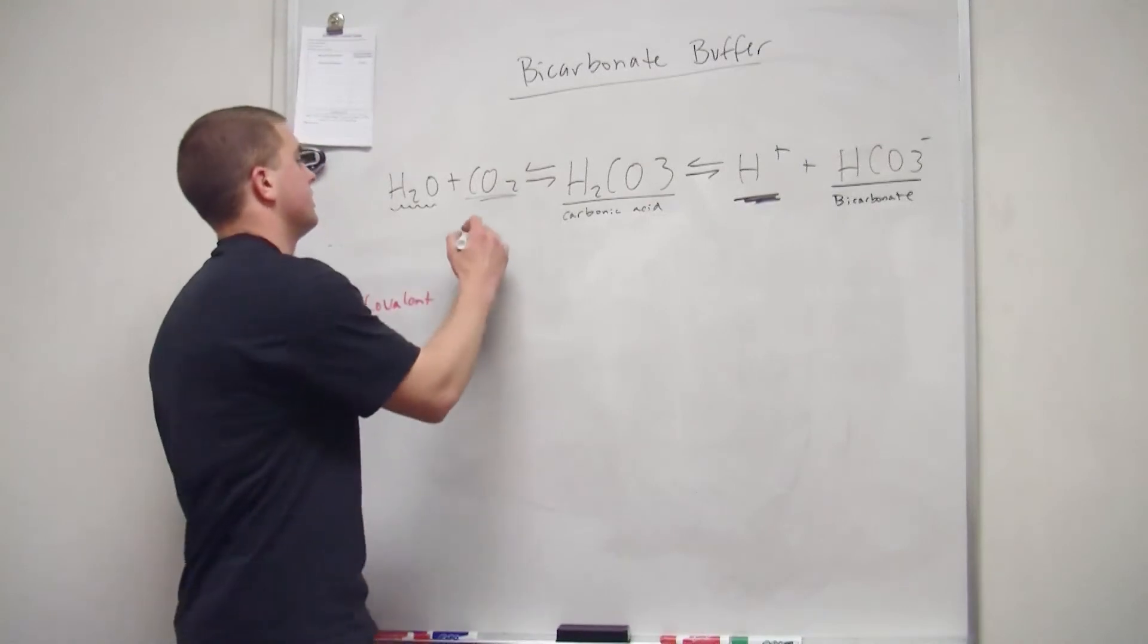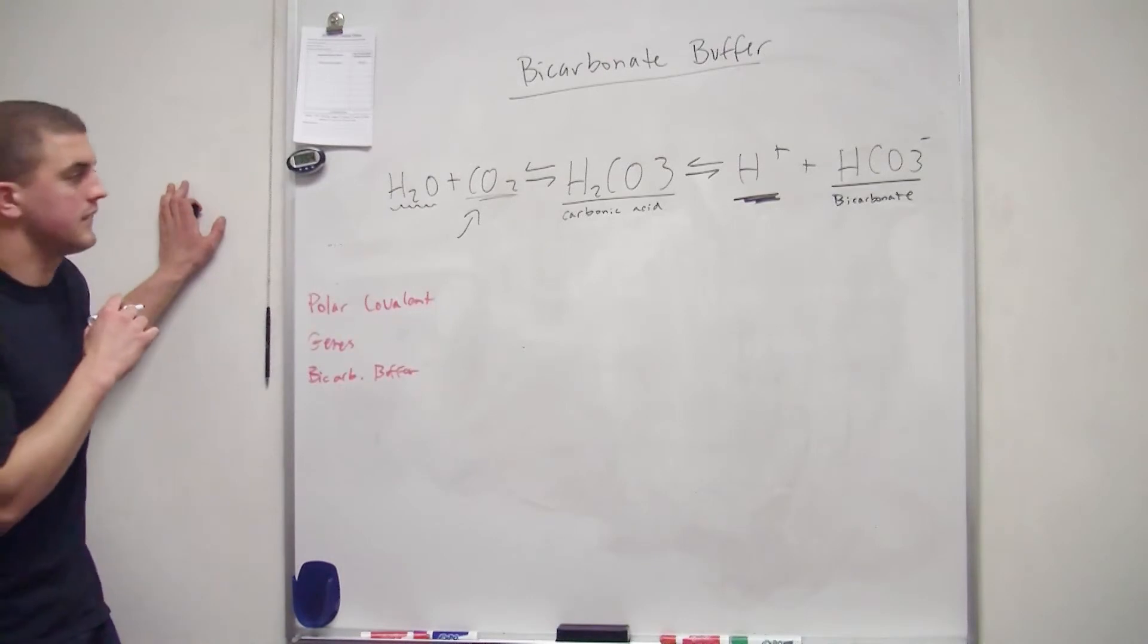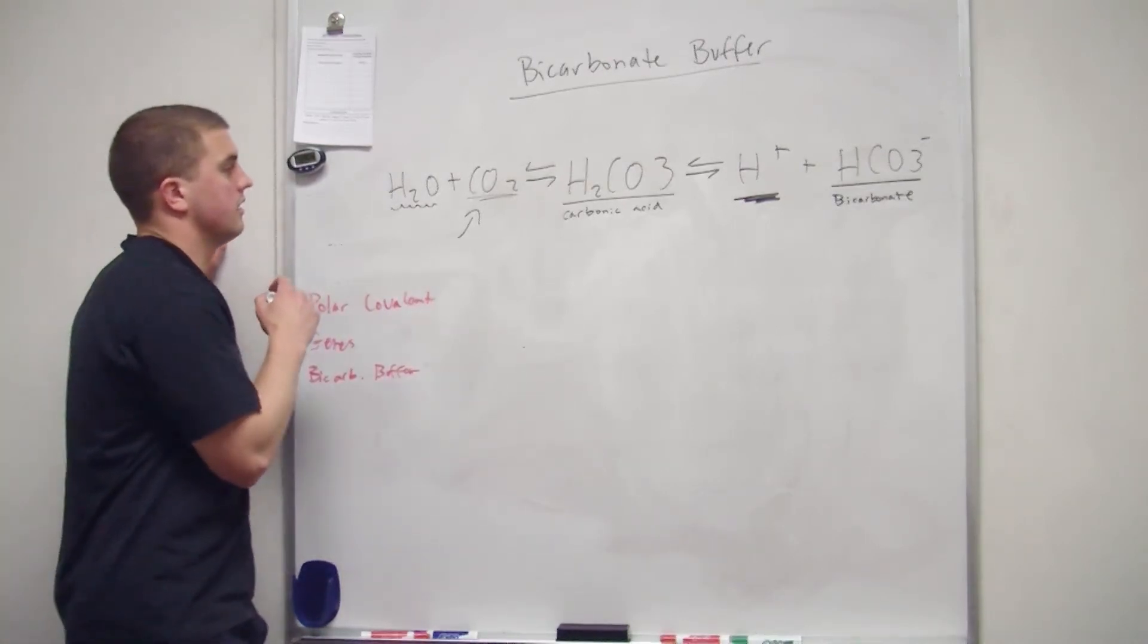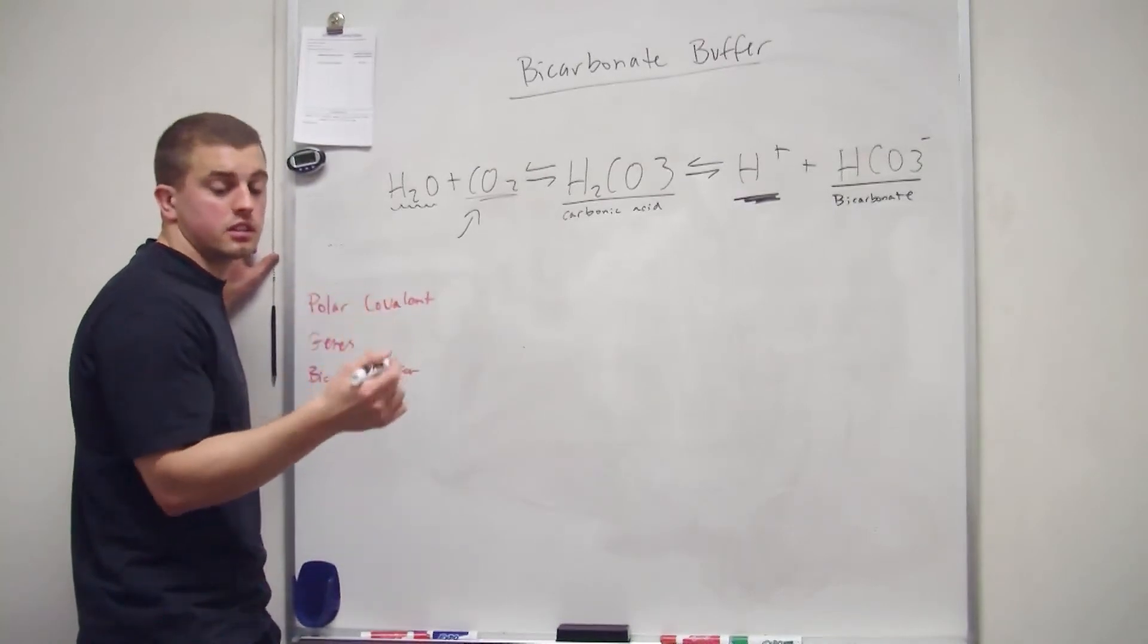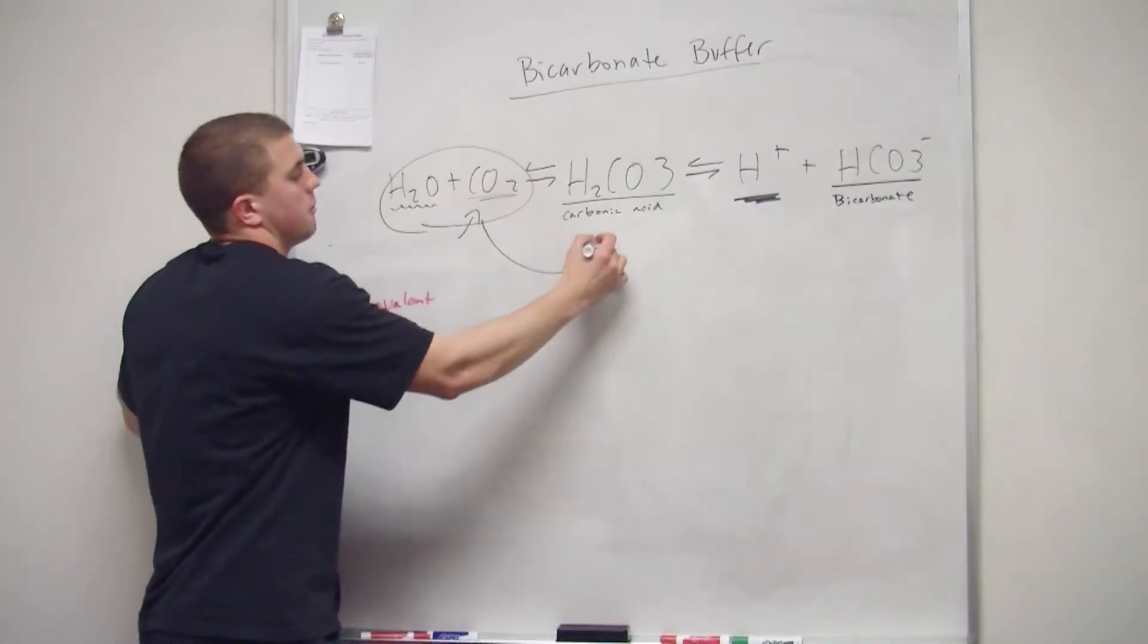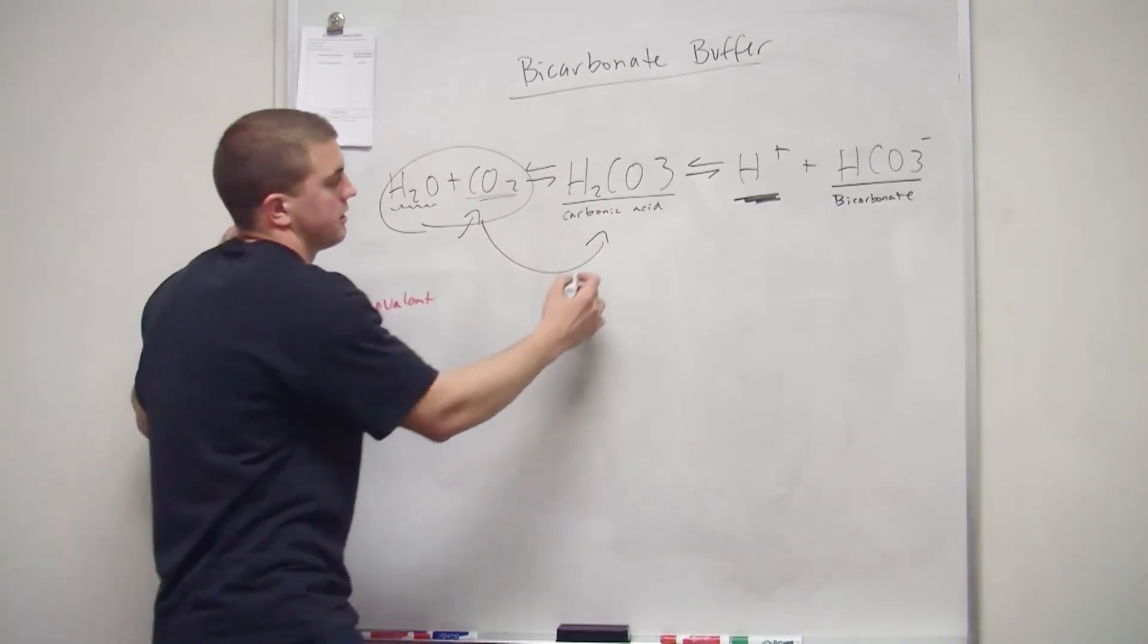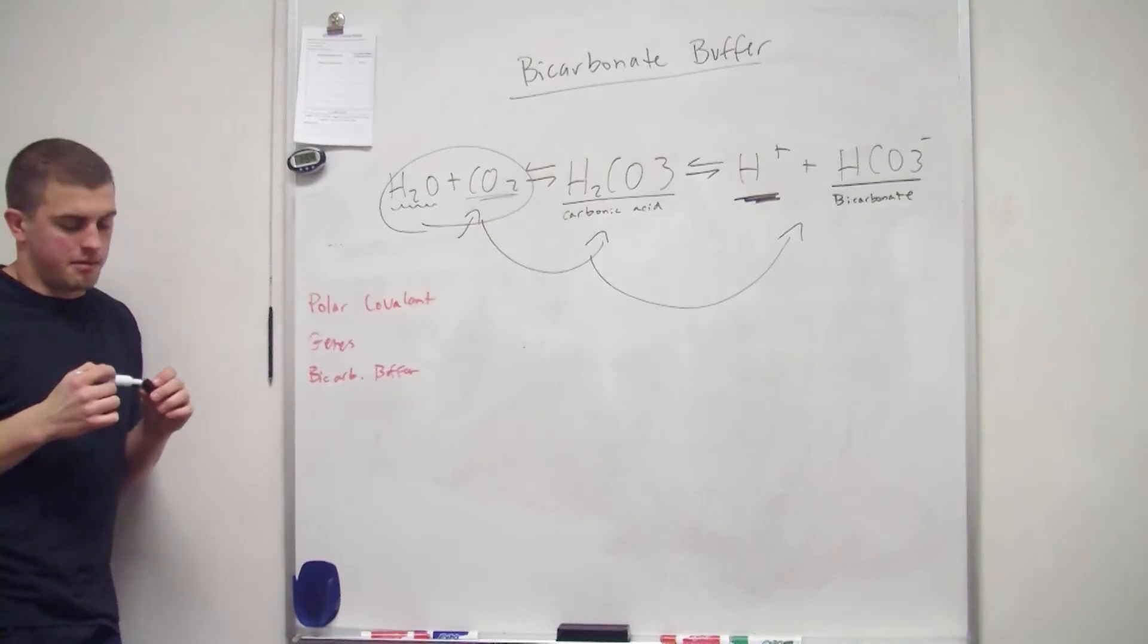So likewise, CO2, if you have too much of it in your blood, what's going to happen? Then you're going to become a little bit alkalinic. It's a little acidic. So it's going to combine with water, make carbonic acid, dissociate, and make those two.